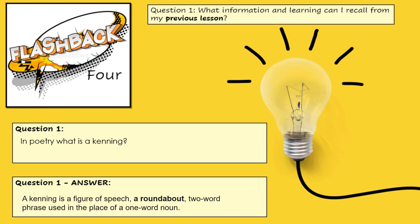Ask your child: what is a kenning? The children know that a kenning is a two-word phrase used in place of a one-word noun. So for example, if we wanted to describe a tiger, we wouldn't say 'a tiger' — we would use two words to describe the tiger, such as 'stripe predator.'